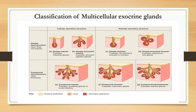If the secretory portion is alveolar-like and the duct is single, we call it a simple alveolar gland. In simple branched alveolar glands, the alveoli are branching — an example is the sebaceous glands.